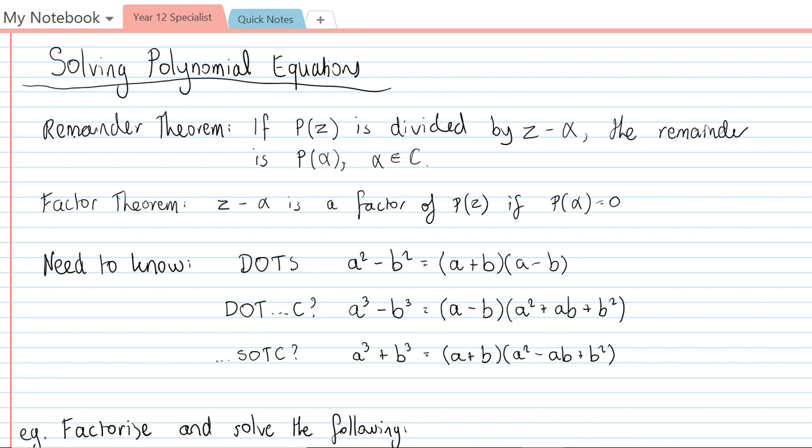In addition to that, we have the factor theorem. So that means that z minus alpha, again alpha is just some kind of complex number, is a factor of P(z) if P(alpha) is equal to zero. What this means is that the remainder is equal to zero, so it's gone into it perfectly and so it must be a factor.